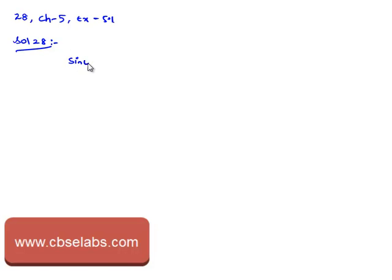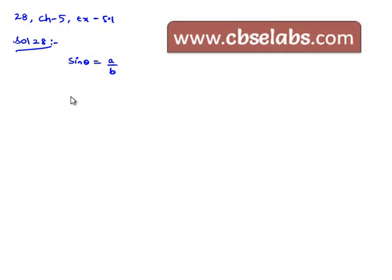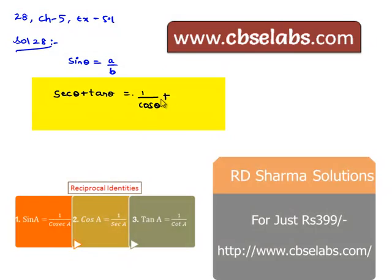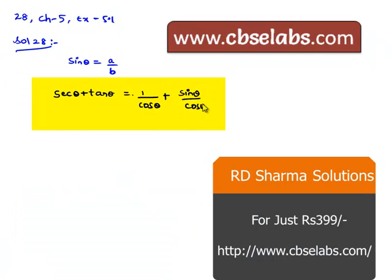Therefore, since sin theta is given as a by b, we need to find the value of secant theta plus tan theta. We know that secant theta is 1 by cos theta, and tan theta is sin theta by cos theta. Therefore, this will be equal to 1 plus sin theta, divided by cos theta.